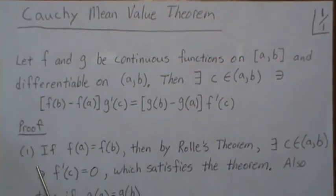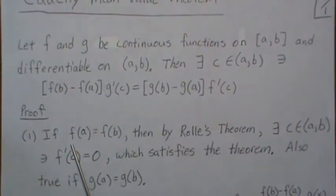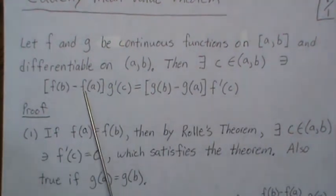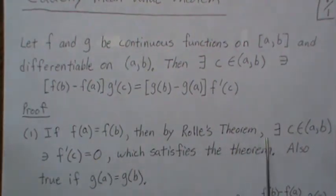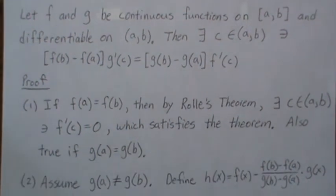If f(a) equals f(b), then by Rolle's Theorem there exists a c in (a,b) such that f'(c) equals zero, which satisfies the theorem. Also true if g(a) equals g(b). So that's one of the trivial parts to proving the Cauchy mean value theorem.